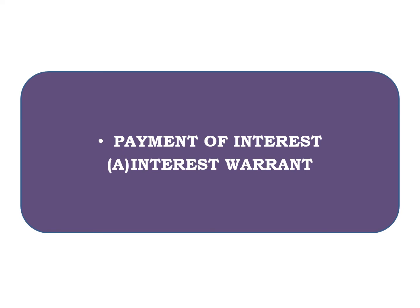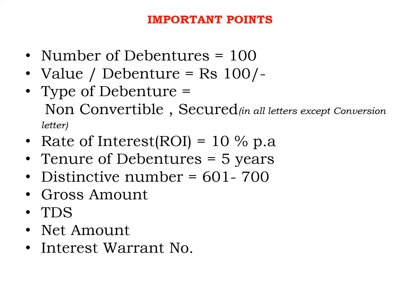In today's lecture, we are going to take two letters. First is payment of interest through interest warrant. A person who is not having dematerialized form of shares, whose bank account is not connected with the demat account — to him, the company has to send the interest through registered post to his registered address. There are certain important points which we always revise, and these points should be there in your letters. The checker will be looking for these points.